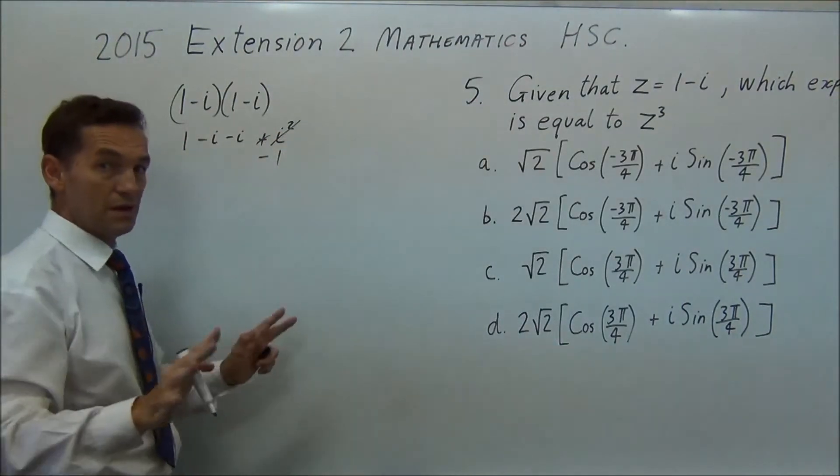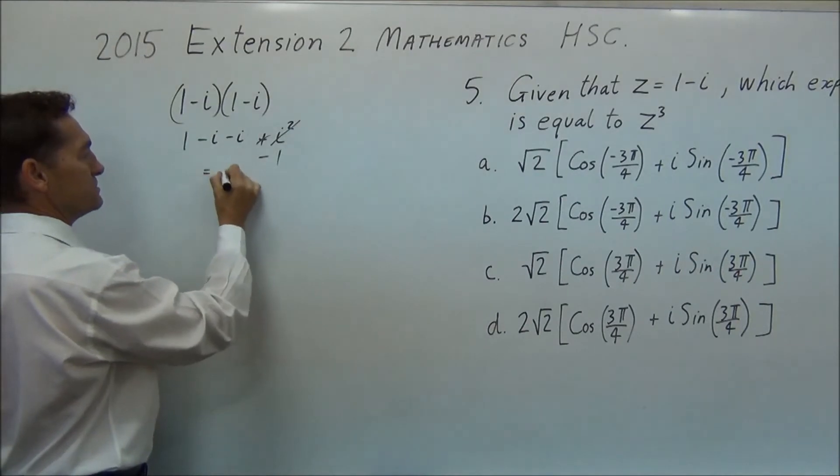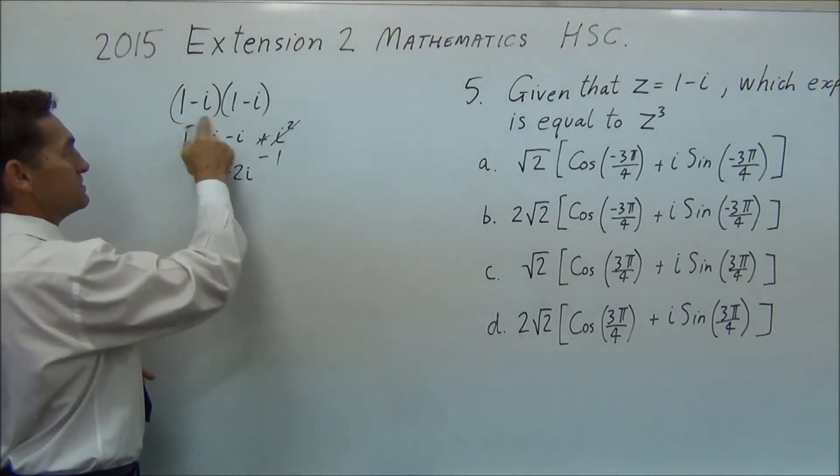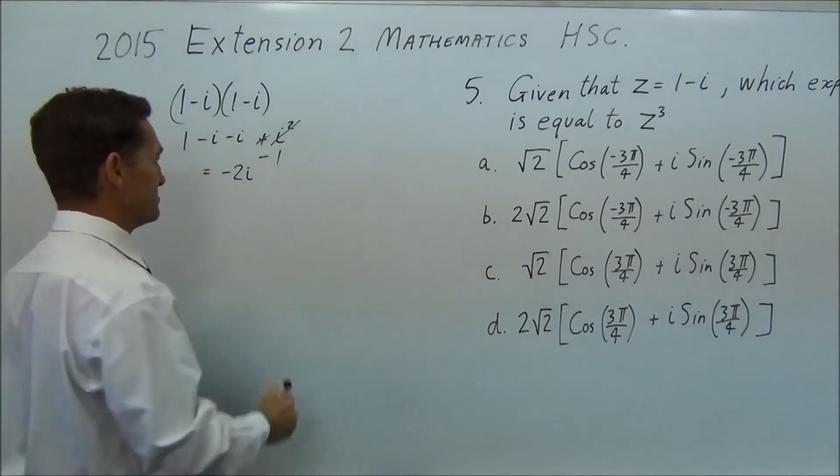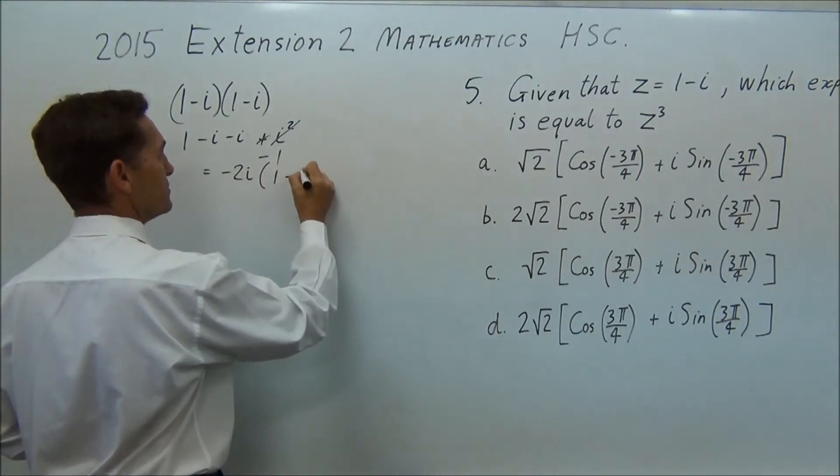That is minus one. One minus one. Nothing, it's gone. Minus i minus i. So that equals minus two i. So that squared is minus two i. Next step, multiply again by one minus i.